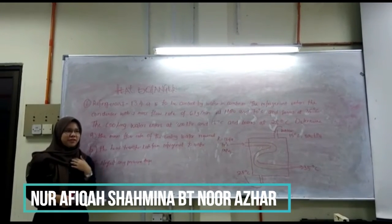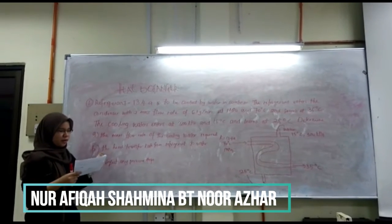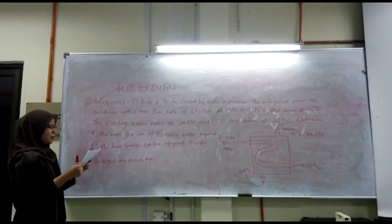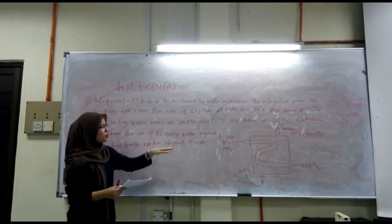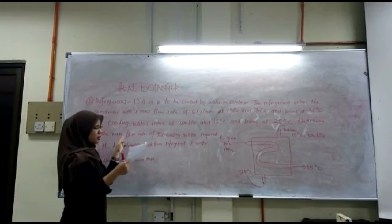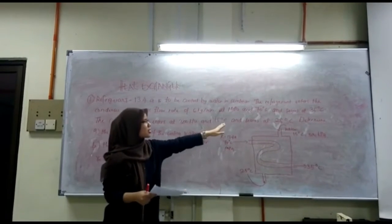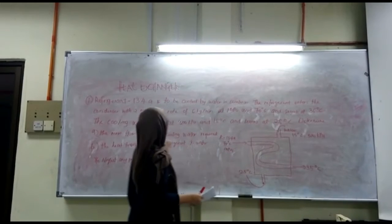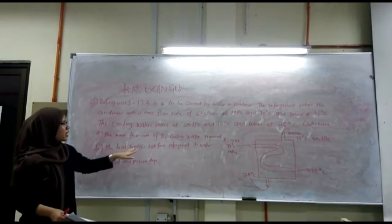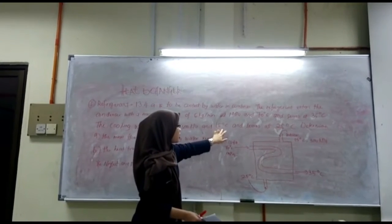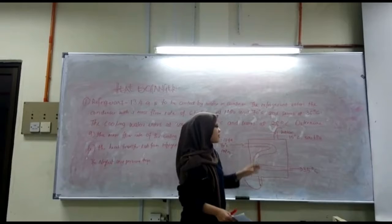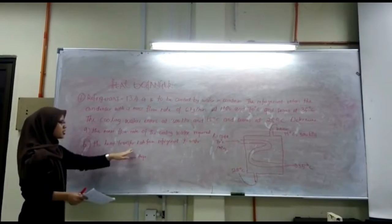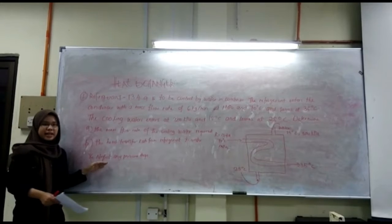Hello, my name is Mr. Afika. Today I would like to solve one heat exchanger problem. The question is about refrigerant R-134a to be cooled by water in a condenser. The refrigerant enters the condenser with a mass flow rate of 6 kg/min at 1 MPa and 70°C and leaves at 35°C. The cooling water enters at 300 kPa and 15°C and leaves at 25°C. Determine the mass flow rate of the cooling water required and the heat transfer rate from refrigerant to water, neglecting any pressure drops.